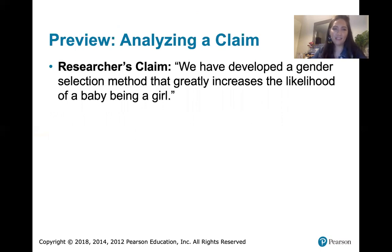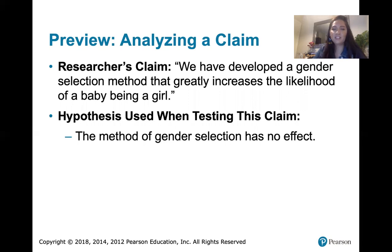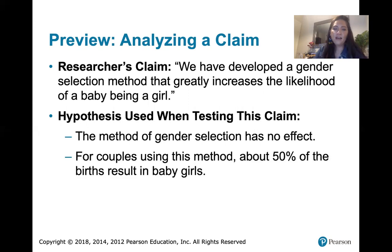Here's an actual claim made by some researchers: they said they've developed a gender selection method that greatly increases the likelihood of a baby being a girl. We're going to use hypothesis testing on this claim. The hypothesis we test is that the gender selection method doesn't work — that it has no effect — meaning about 50% of births will still result in baby girls. That's our underlying assumption.